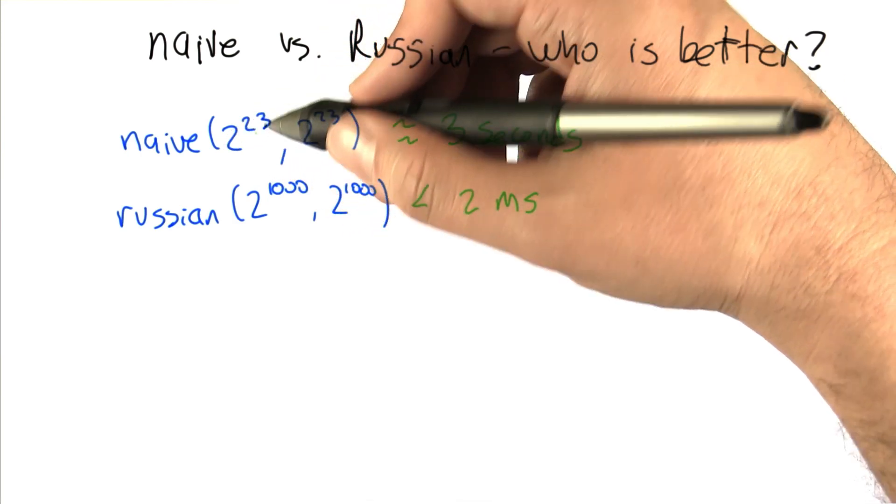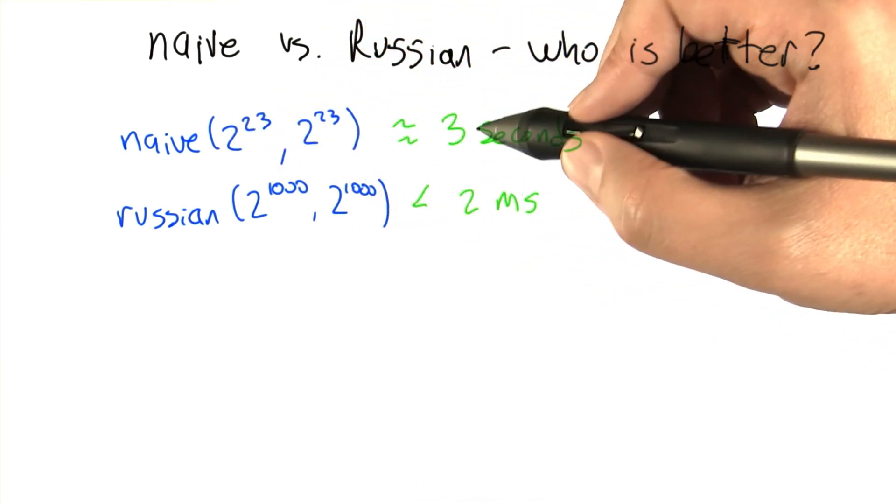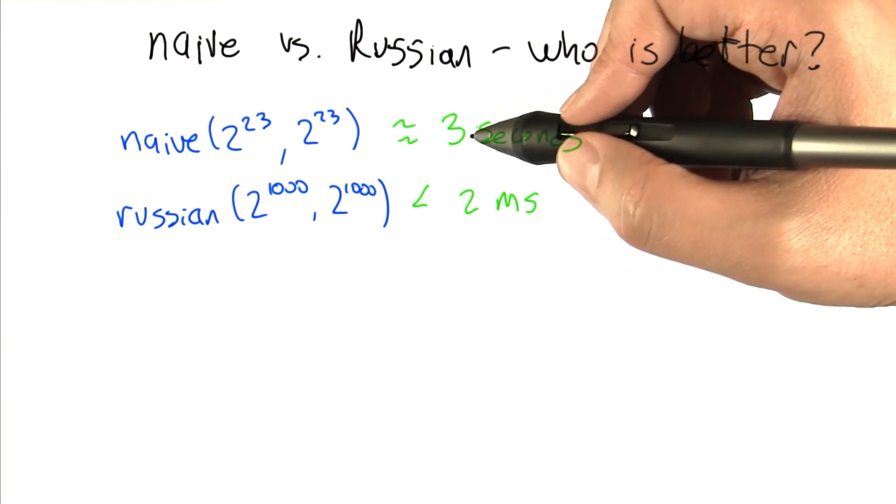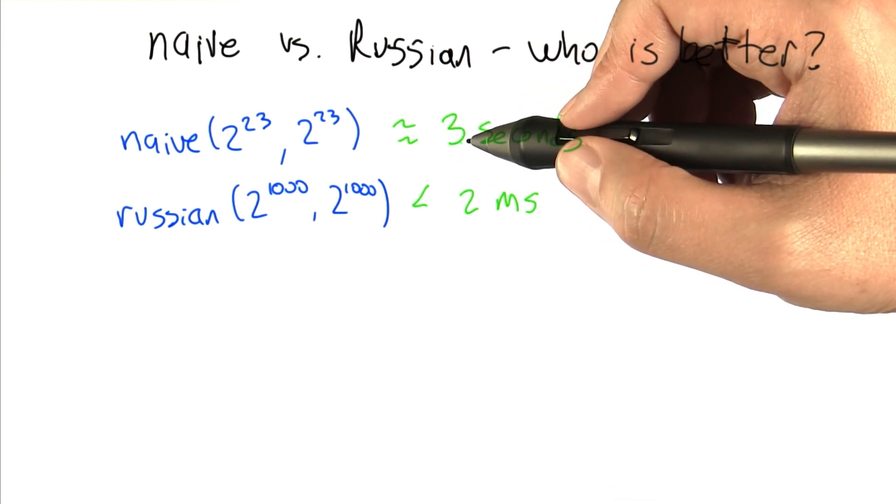Whereas for, shall we say, only 2 to the 23rd, Naive was taking already three seconds, which is a lot longer. So there's a huge difference between the running times of these algorithms.